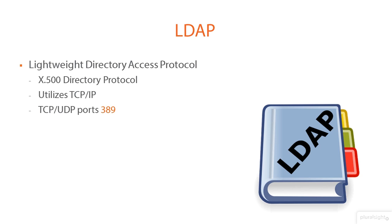So if you're looking at firewall rules to implement to keep things either within your organization, or if you have people that access LDAP from outside your organization, then ports 389 — and perhaps some additional ports as well — need to be open on the firewall.